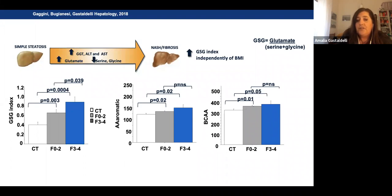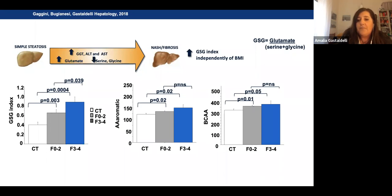The most notable finding was the GSG index, developed with my fellow Melania Galgani, which uses glutamate, serine, and glycine — the amino acids used to synthesize glutathione — and relates them to glutathione metabolism. Subjects with fibrosis stages 3 and 4 have a much higher GSG index, suggesting an increased demand for glutathione and increased glutamate metabolism. This index was highly correlated with gamma-GT, the major enzyme that transaminates glutathione and releases glutamate.